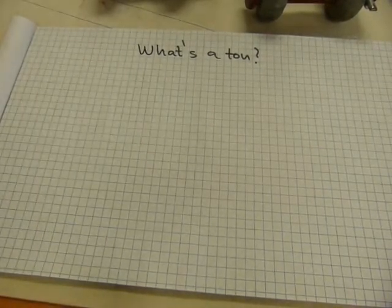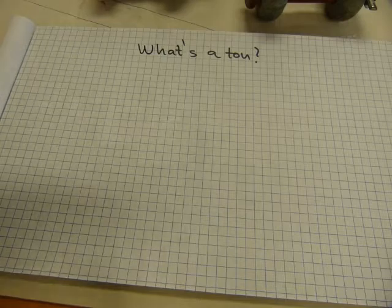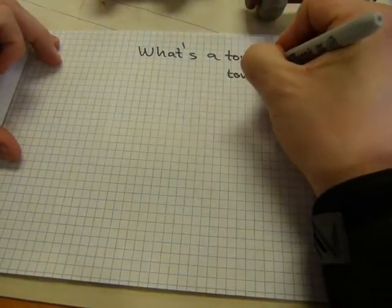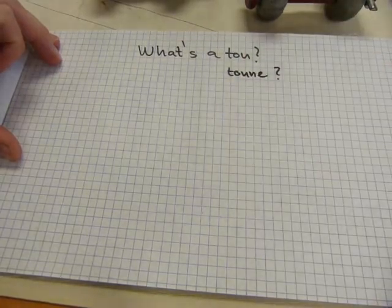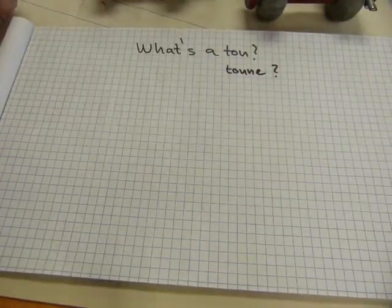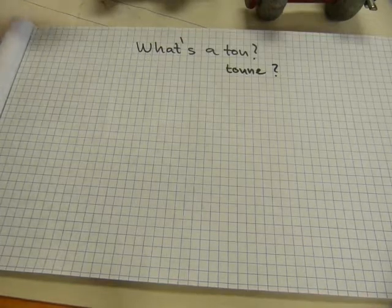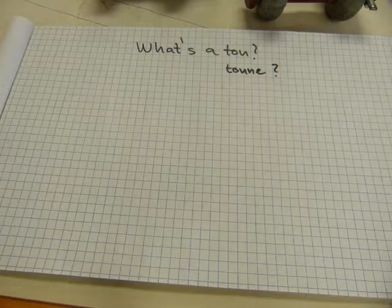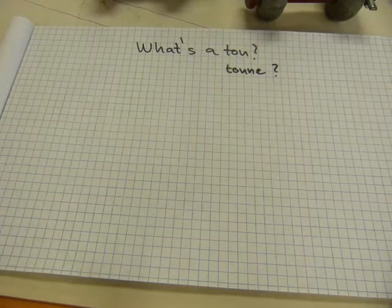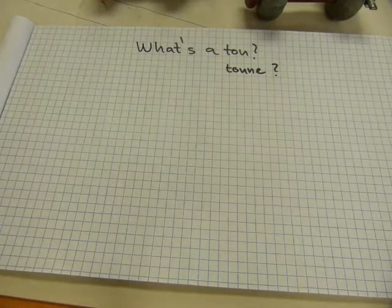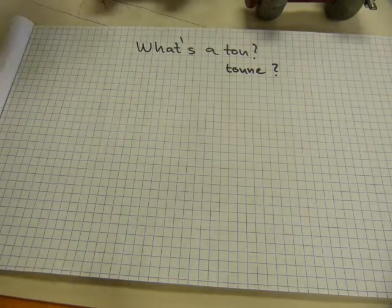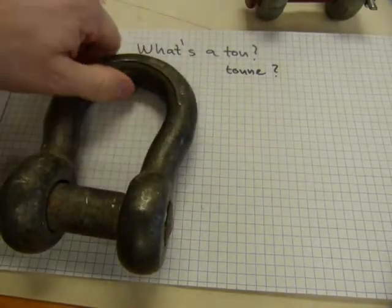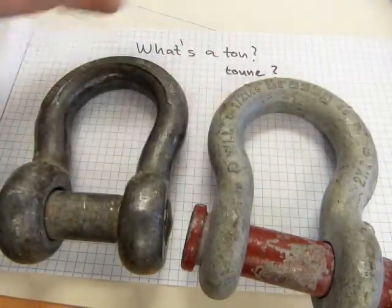In this video, I'm going to tell you a little bit about tons and tonnage. Maybe you've seen tons spelled that way. Maybe you've seen tons spelled this way. Maybe it's pronounced tonne in your geographical area. Maybe it's pronounced metric ton, just to distinguish from the other ton. That's exactly what I'm talking about. We have more than one ton and more than one spelling, and I'm going to tell you a little bit about this topic through the example of these two shackles.